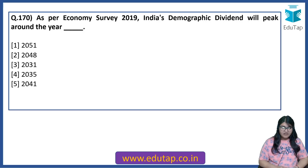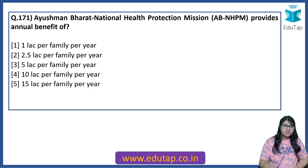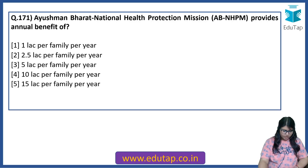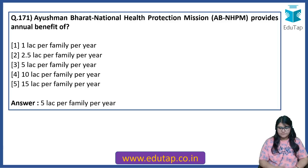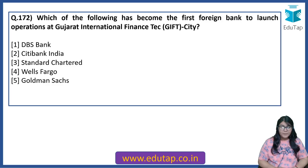As per the Economic Survey 2019 (2018-19), India's demographic dividend will peak around the year 2041. Ayushman Bharat National Health Protection Mission provides an annual benefit of 5 lakh rupees per family per year. Which of the following has become the first foreign bank to launch operations at Gujarat International Finance Tech City (GIFT City)? The answer is Standard Chartered Bank.